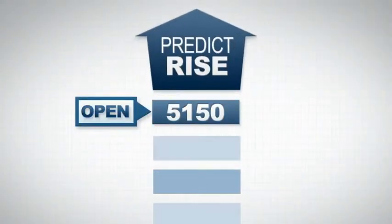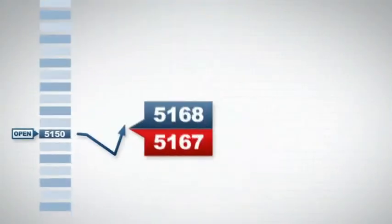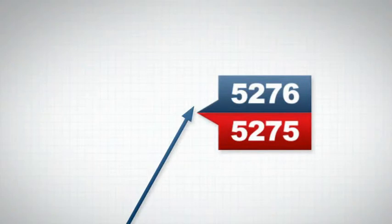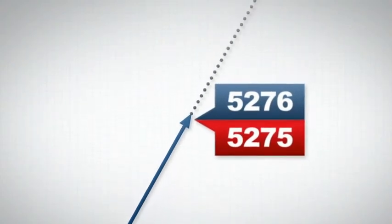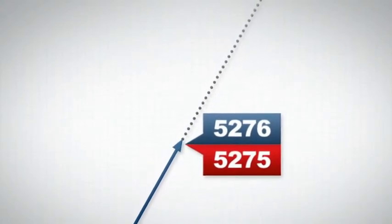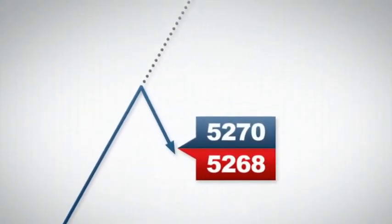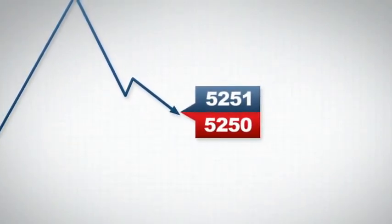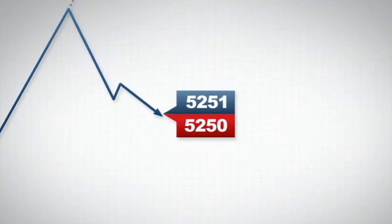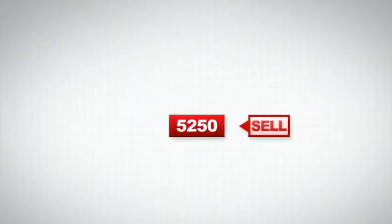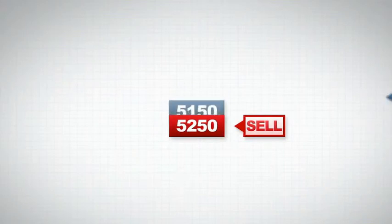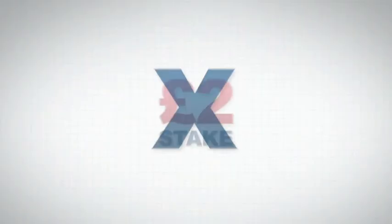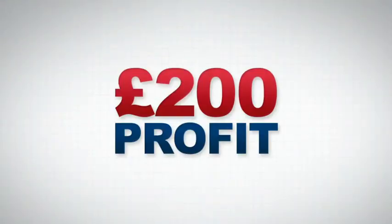As you anticipated, the value of the FTSE 100 starts to rise. After a little fluctuation, the price rises to 5275 to 5276. You believe the price will continue to rise, so you hold off from closing the bet. However, instead the price falls and your profit starts to drop, so you decide to close the bet. At this point, the price is 5250 to 5251. To do this, you need to deal in the opposite direction, so you sell at 5250. The difference between the original buy price and the new sell price is 100 points, giving you 100 times £2, which equals £200 profit.